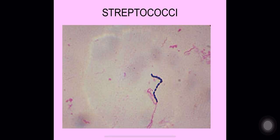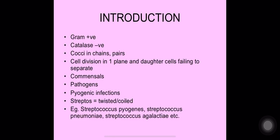Streptococci — in this figure we can see gram-positive cocci in chains, because streptococci occur in chains. 'Strepto' means chain. Streptococci are gram-positive and catalase-negative, which differentiates them from staphylococci. They are cocci arranged in chains or in pairs.